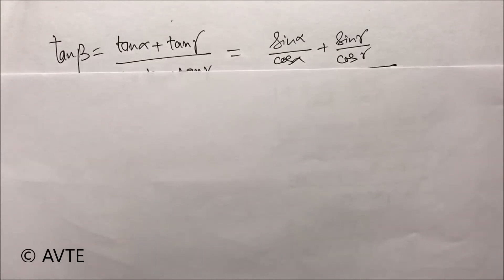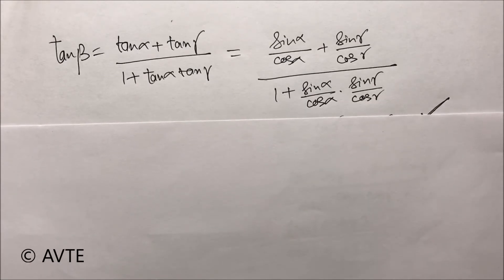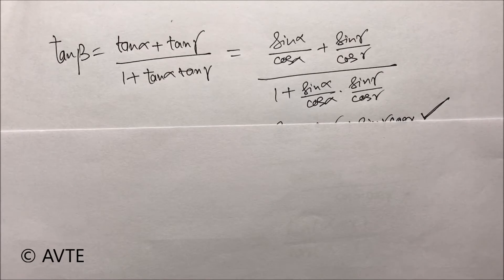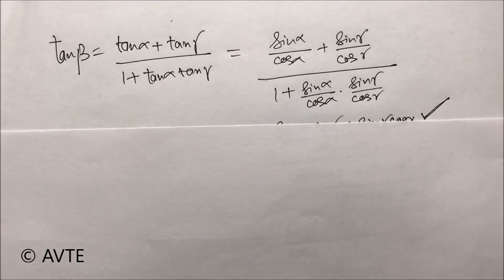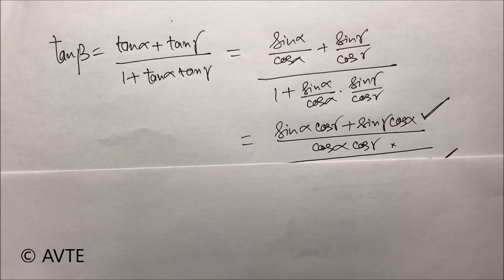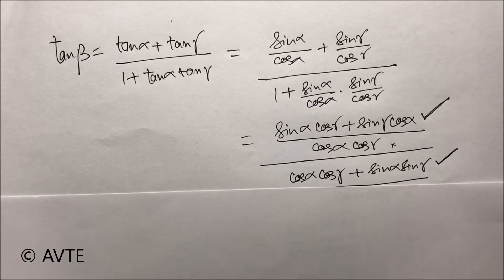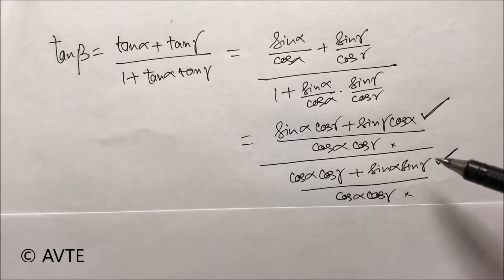We break tan β = (tan α + tan γ) / (1 + tan α·tan γ) into sin/cos. Taking the LCM both in the numerator and denominator, the numerator turns to sin α·cos γ + sin γ·cos α, divided by cos α·cos γ. In the denominator, taking LCM gives cos α·cos γ + sin α·sin γ, divided by cos α·cos γ.